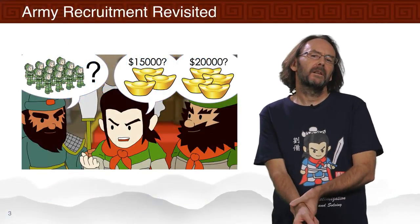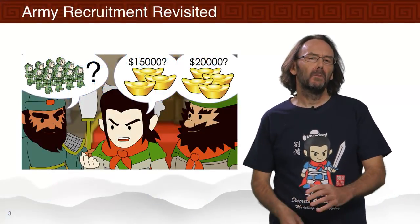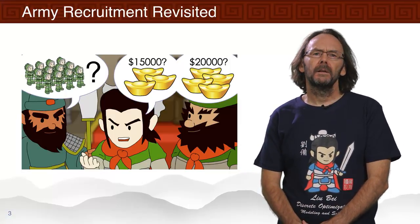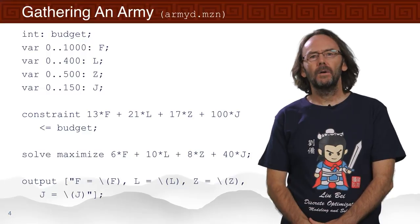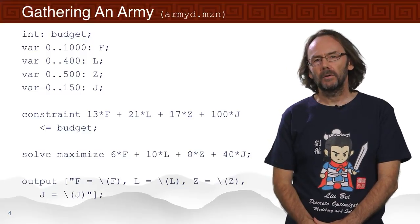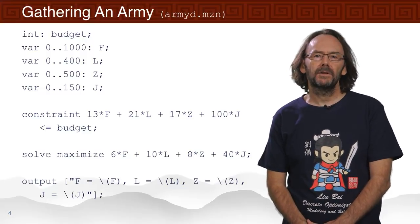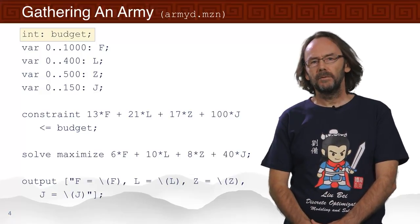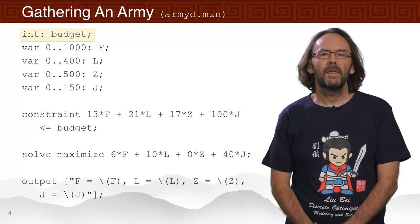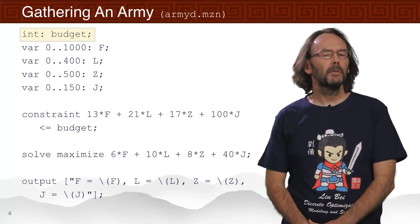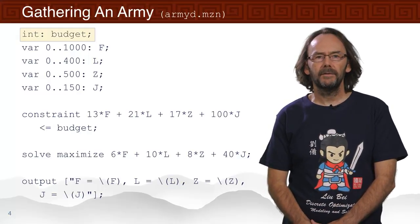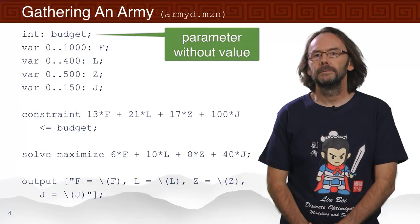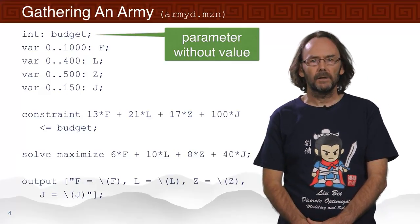Our three heroes are interested in how much better an army they could have if they had more money. Here's the army model from a few lectures ago, but we've made one change: the budget was previously 10,000, but we've removed that value. The budget is now left unspecified — this is a parameter without a value.